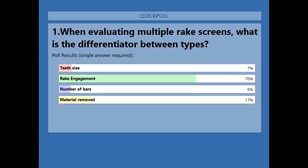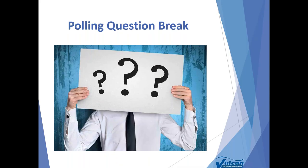The answer to the first poll question is rake engagement — that's what differentiates the two multiple rake screens. The confusing part was that material removed could differentiate a multiple rake screen from a climber type screen, but that was the trick answer. The correct differentiator between the two multiple rake screens is rake engagement.